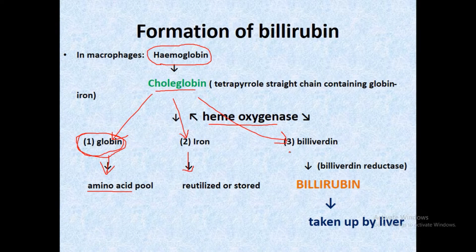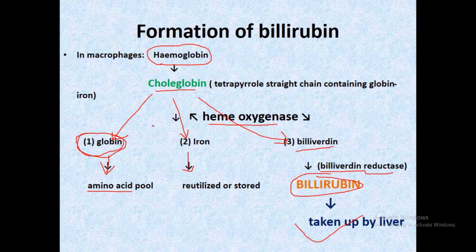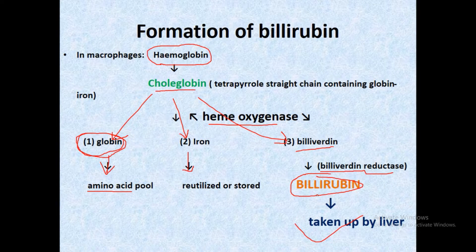Biliverdin, when acted upon by biliverdin reductase enzyme, is converted to bilirubin. This bilirubin is then taken up by the liver. At this stage, the bilirubin is unconjugated bilirubin, because conjugation takes place in the liver — before entry into the liver, bilirubin remains unconjugated.